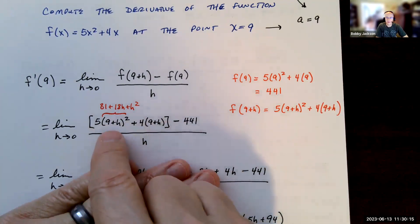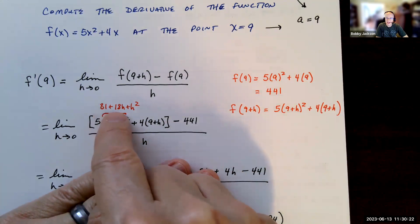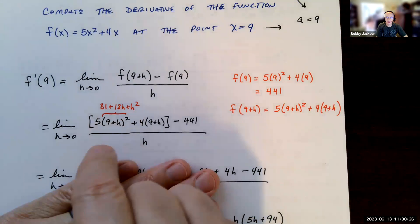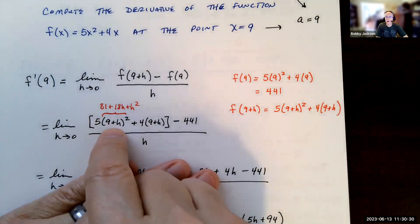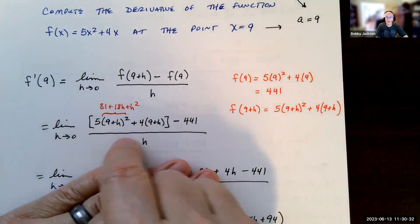We're going to expand all this out and then simplify the numerator by combining like terms. So (9+h)² - make sure you understand that that is 81 plus 18h plus h². Not 81 plus h². You just can't square the nine and square the h. Remember, (9+h)² is (9+h) times (9+h), so you have to FOIL that out.